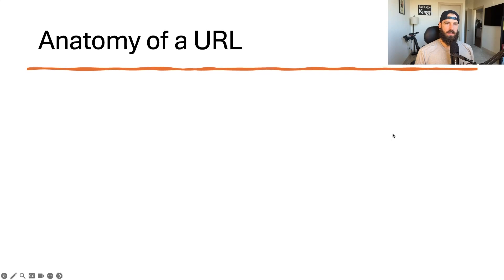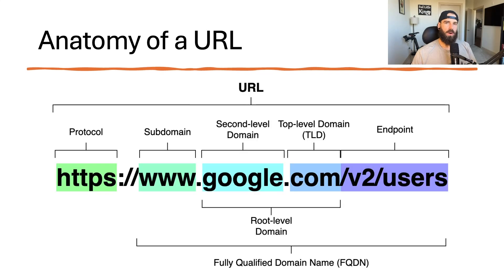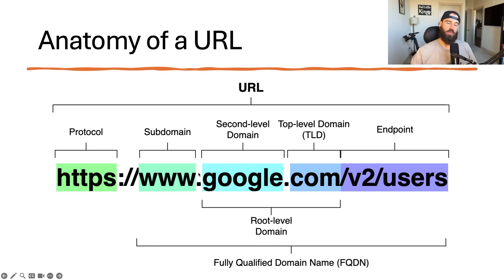Let's break down the anatomy of a uniform resource locator, or URL. A URL is comprised of many different pieces: the top-level domain (in this case .com), the second-level domain (Google), and these together comprise the root-level domain. You'll also have the protocol, which in this case is HTTPS. Some URLs include a subdomain — in this case www — which is anything that occurs before the second-level domain and after the colon slash slash. The final part is the endpoint, specifying where in the root-level domain you wish to navigate. Combining all pieces other than the protocol gives you the fully qualified domain name — the exact location of a place on the internet.